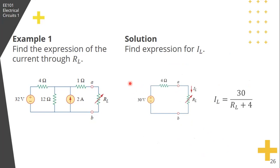Therefore, the expression for IL will be the source VTH, 30 volts, divided by the total resistance, 4 plus RL. If RL equals 2, then IL equals 30 divided by 6, that's 5 amperes. If RL equals 6, then IL equals 30 divided by 10, that's 3 amperes. So we have the expression for the current through RL.